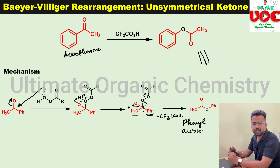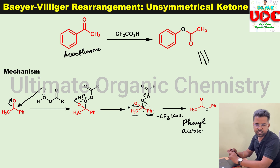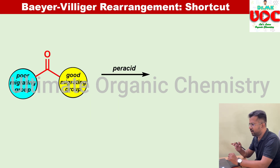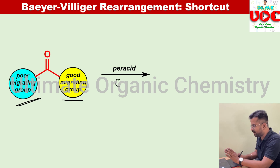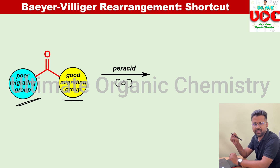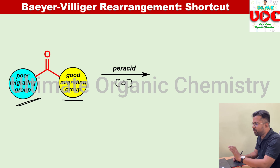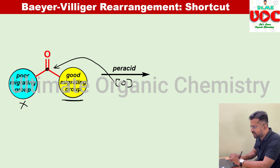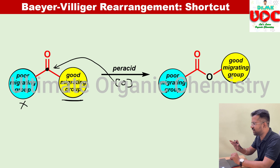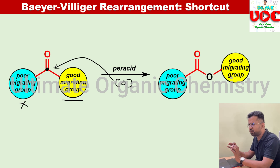If you are appearing for a competitive examination, you do not need to write the full mechanism every time. There is a shortcut method to find the product in Baeyer-Villiger oxidation. For an asymmetrical ketone, there will always be a poor migratory group and a good migratory group attached to the carbonyl carbon. The oxygen atom should be introduced between the carbonyl carbon and the good migratory group — not the poor migratory group. This gives the corresponding ester or lactone.